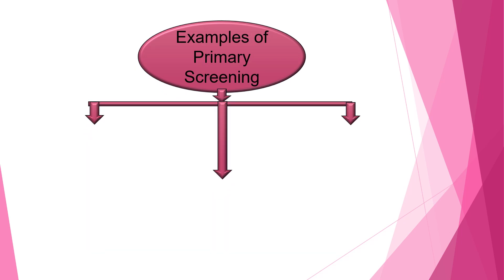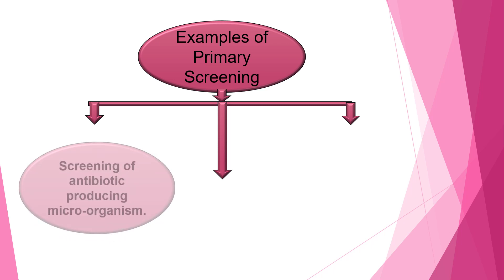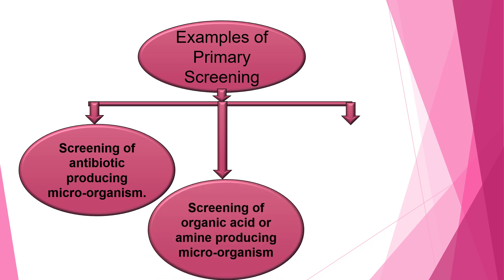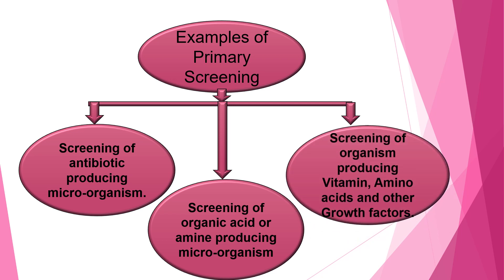Here I am going to give you three basic examples of primary screening. The first one is screening of antibiotic-producing microorganisms, the second is screening of organic acid or amine producing microorganisms, and the third one is screening of organisms producing vitamins, amino acids and growth factors.